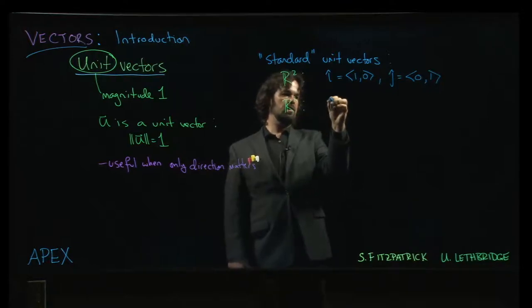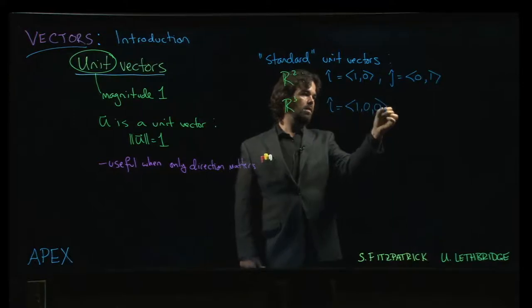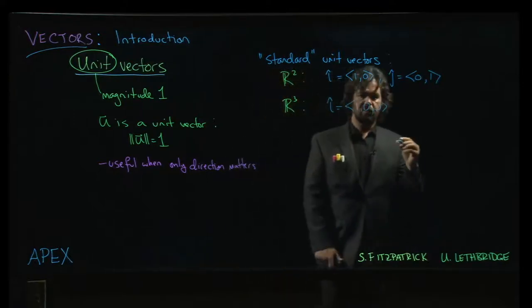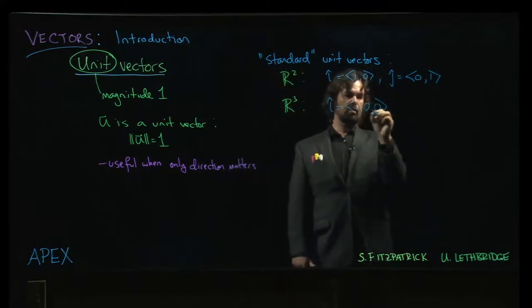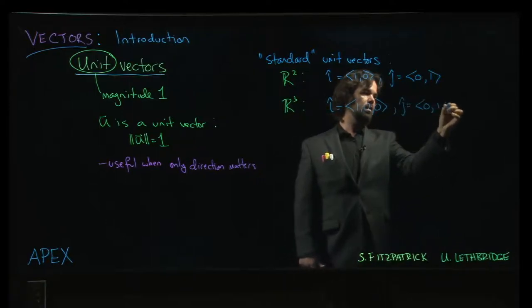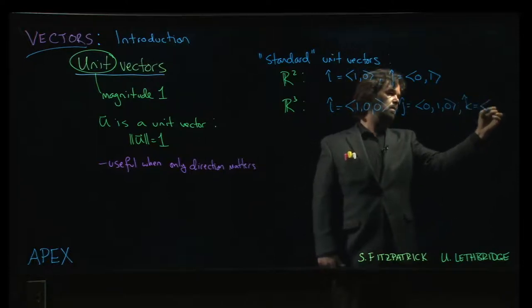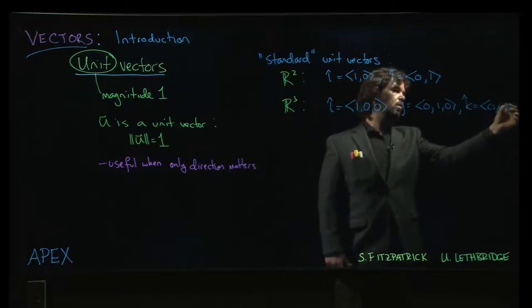And in R3, we again use i and j, but of course now those are three-dimensional vectors, so we have three components. So i is (1, 0, 0), j is (0, 1, 0). And we need a third vector, which we call k, which is (0, 0, 1).